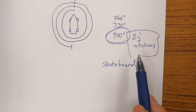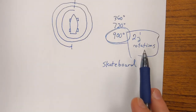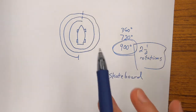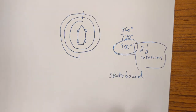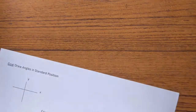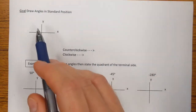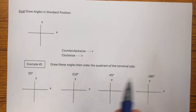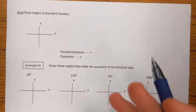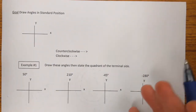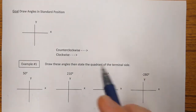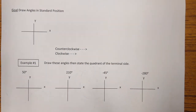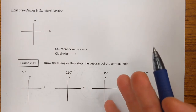At any rate, there is a standard way, when we study rotations, to draw it in math class. It is called drawing an angle in standard position. And standard position not only allows us to draw basic simple angles like acute angles less than 90 degrees — this standard position also allows us to draw angles up to and over 360 degrees.